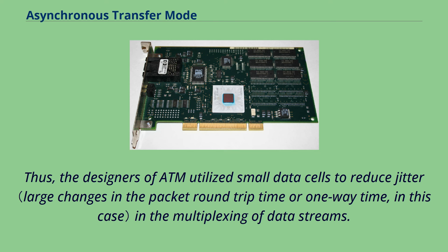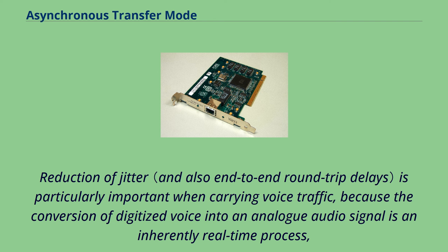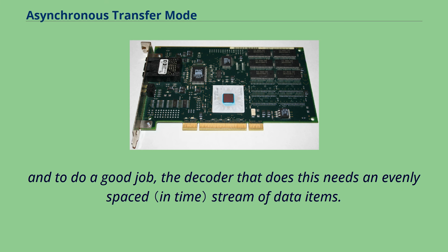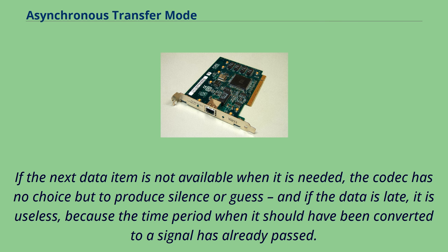Reduction of jitter is particularly important when carrying voice traffic, because the conversion of digitized voice into an analog audio signal is an inherently real-time process. To do a good job, the decoder needs an evenly spaced stream of data items. If the next data item is not available when needed, the codec has no choice but to produce silence or guess, and if the data is late, it is useless because the time period when it should have been converted to a signal has already passed.